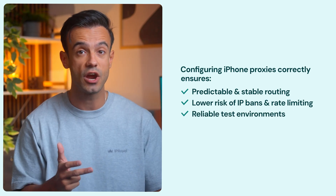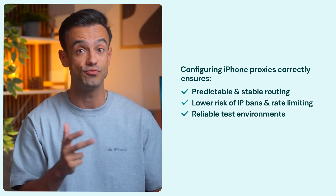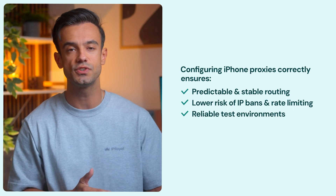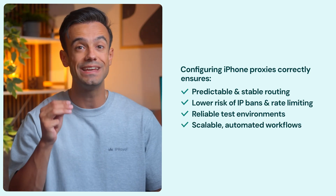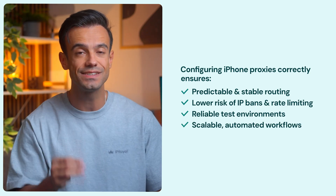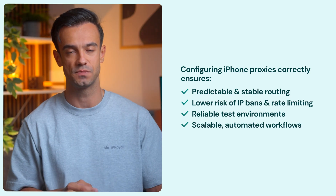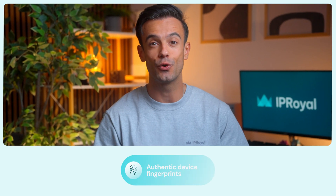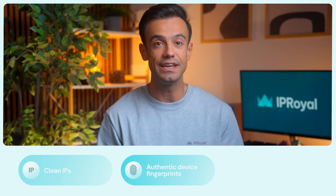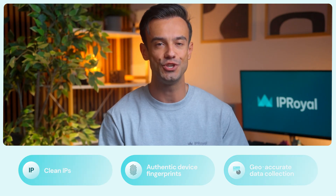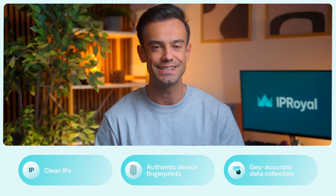This also provides reliable test environments that match real user conditions, and scalable, automated workflows that maintain consistent traffic management. By routing your iPhone traffic through IP Royal's reliable proxies, you ensure authentic device fingerprints, clean IPs, and geo-accurate data collection.